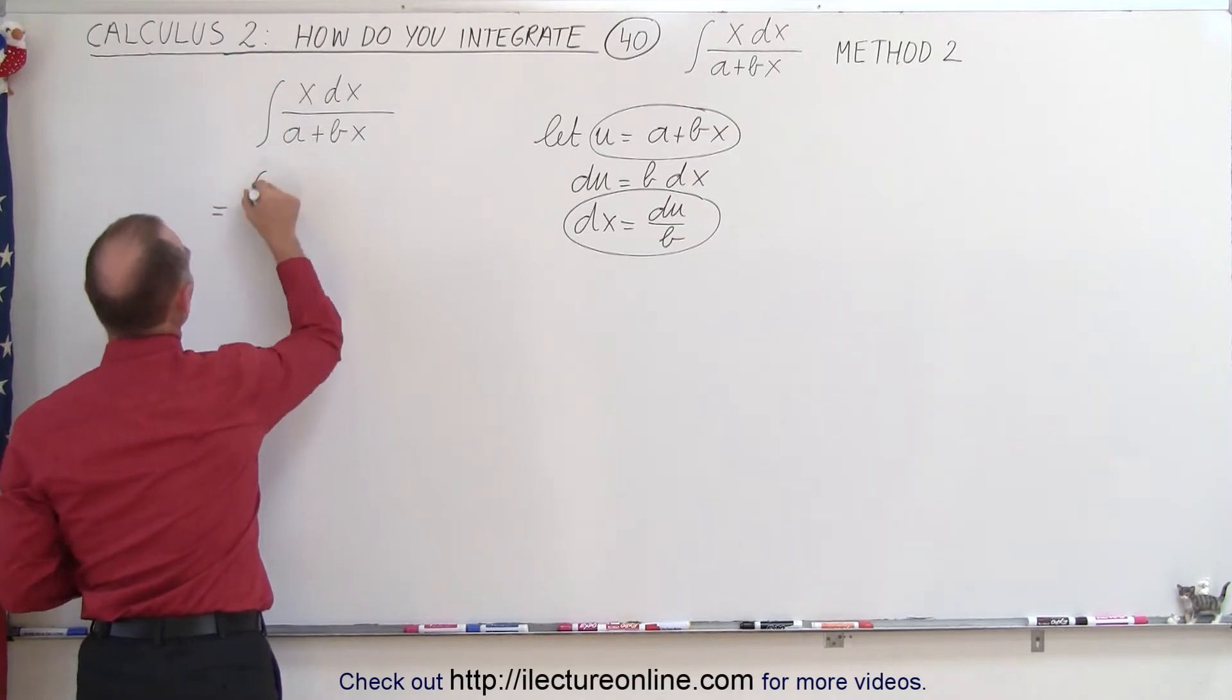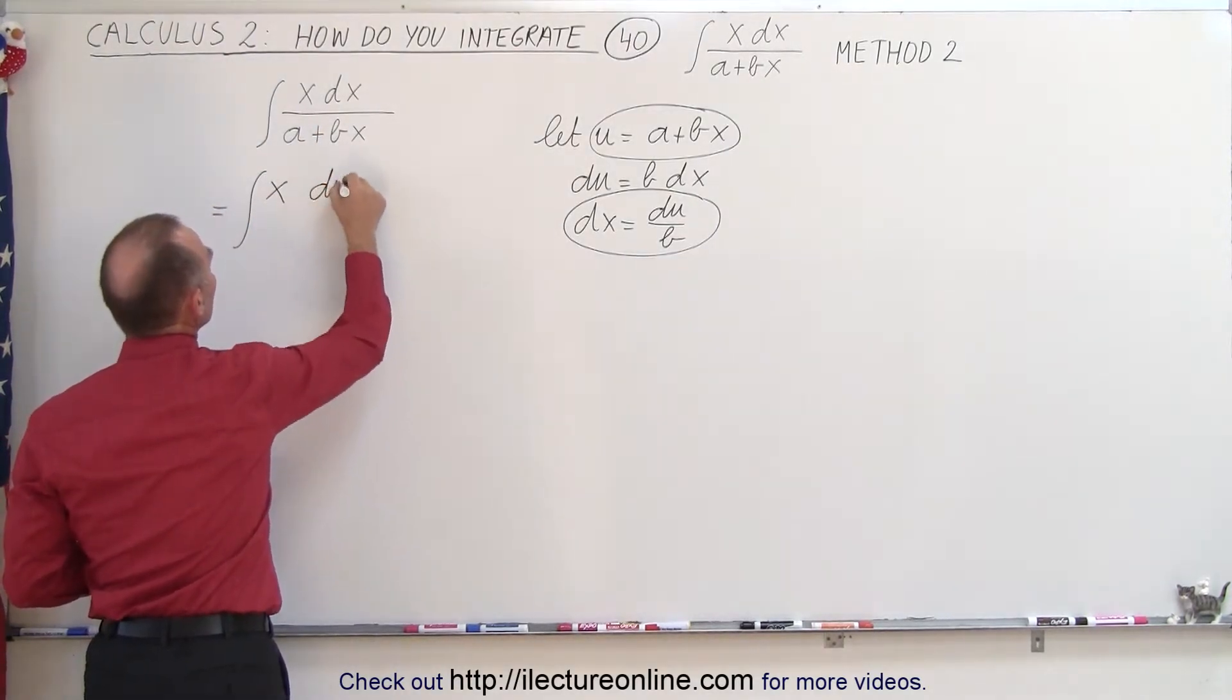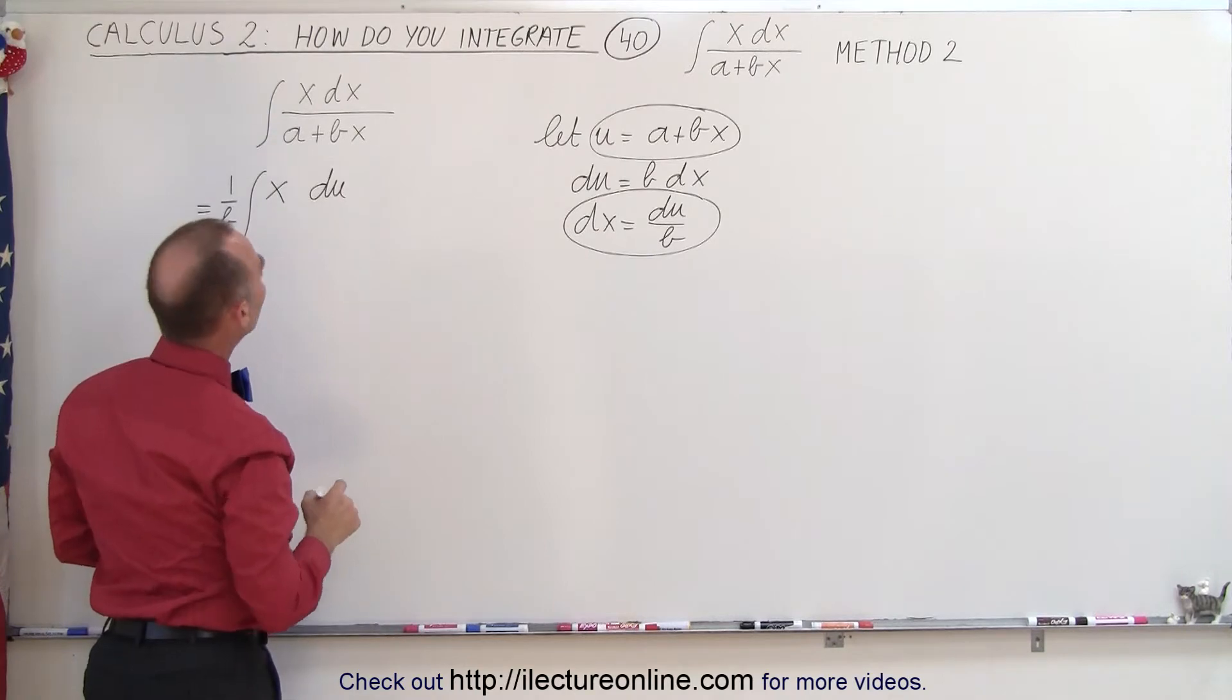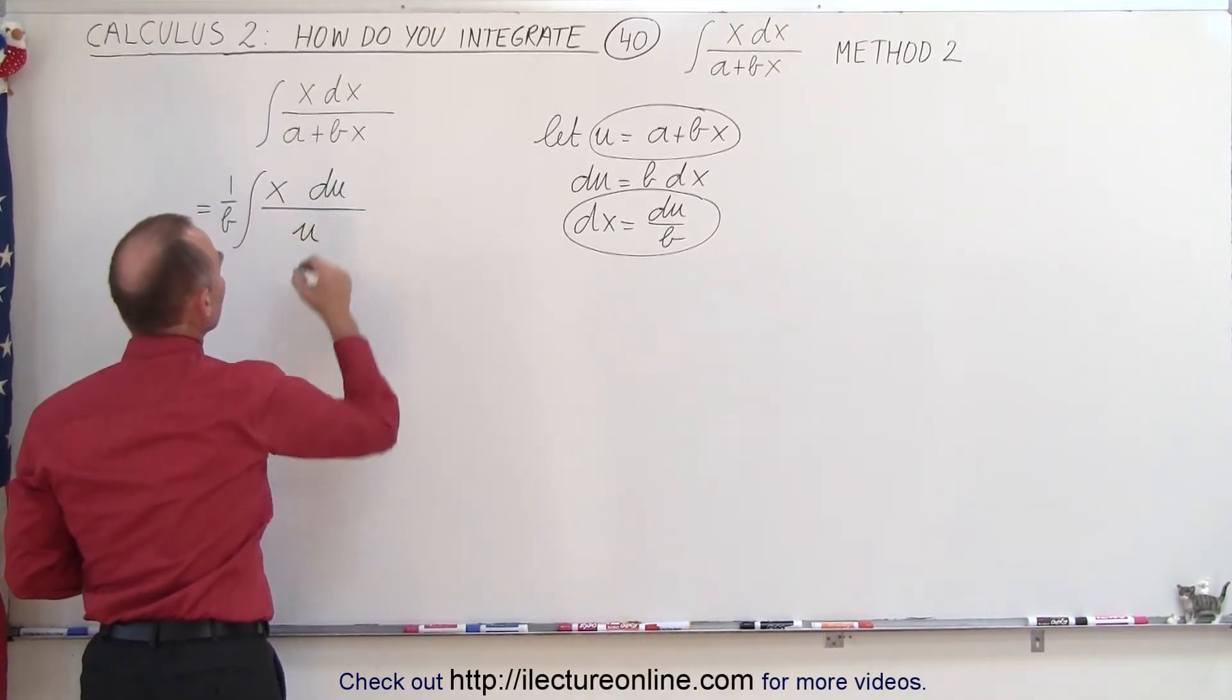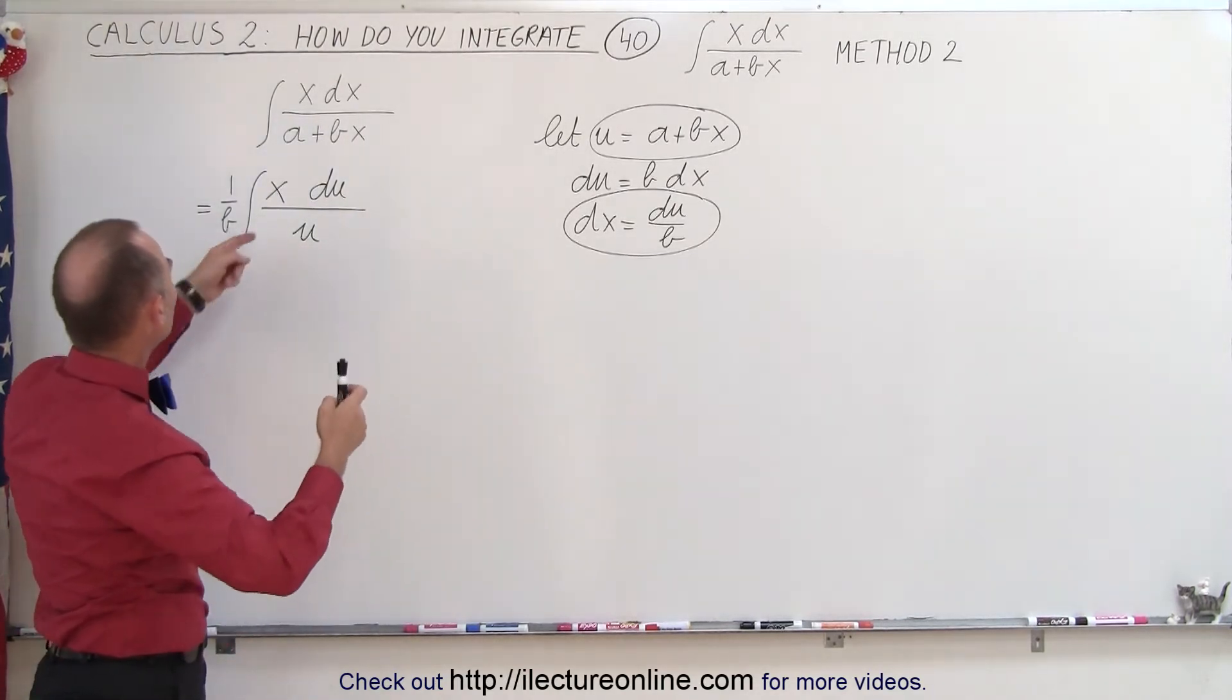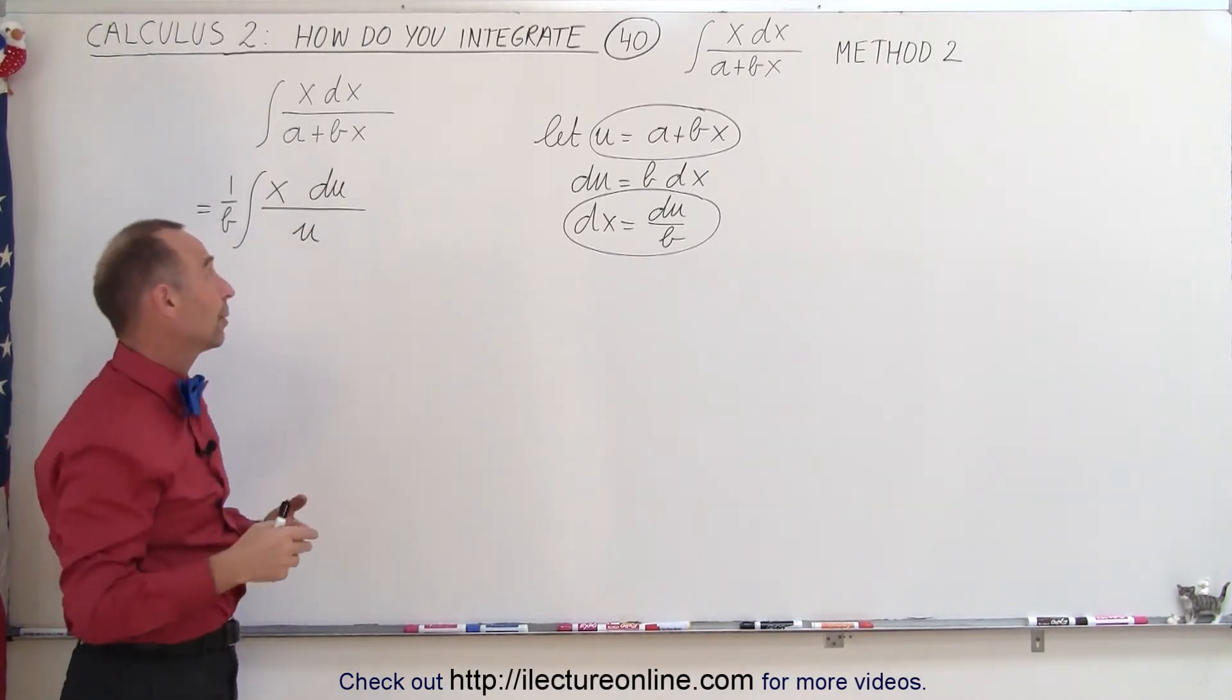So this becomes equal to the integral of x times dx which is du divided by b. Let's take the b outside the integral sign and then in the denominator instead of a plus bx we write u. And here's where we normally would say, how do we do with the x now? We have that x there that we thought we might be able to get rid of but we couldn't.